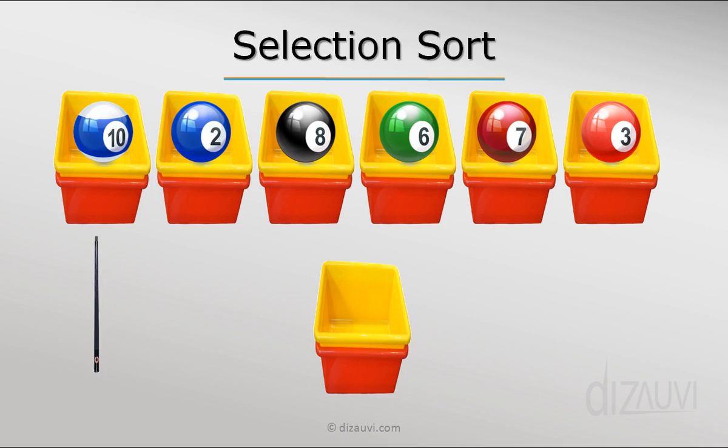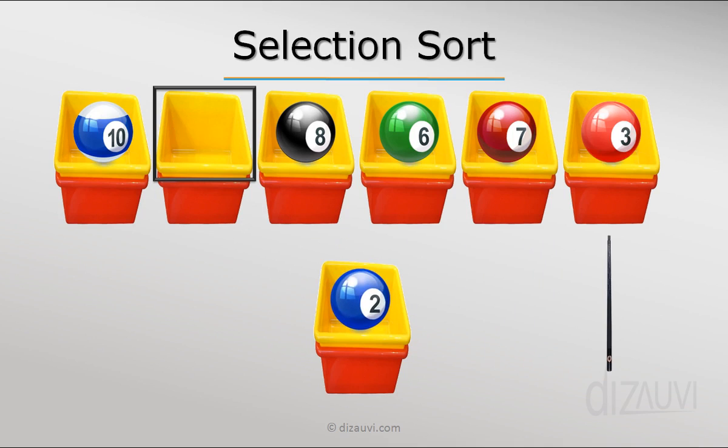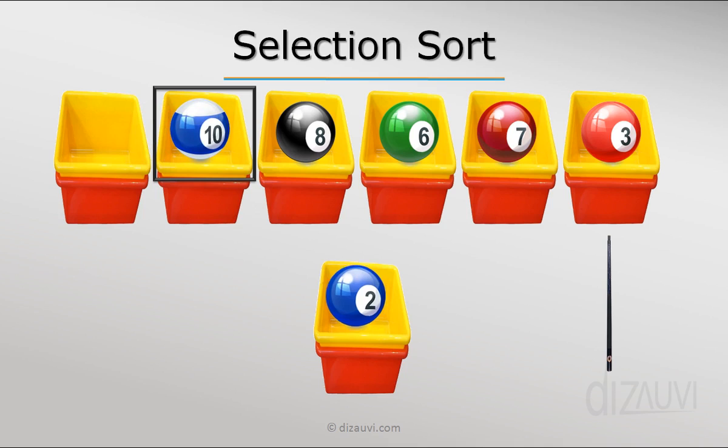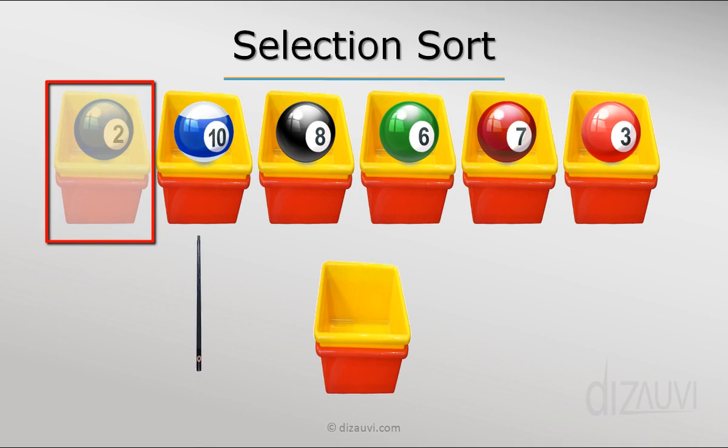In the selection sort algorithm what we do is that we search for the smallest element and swap it with the item in the first bin which is the leftmost bin. So the first element becomes sorted because that contains the ball with the smallest number. So this was iteration one.